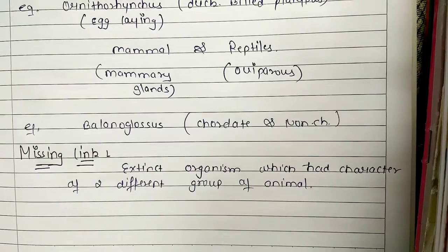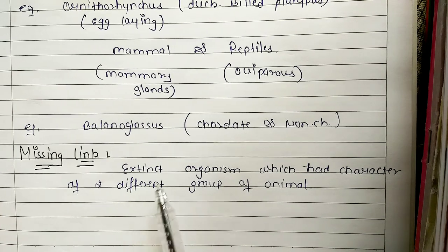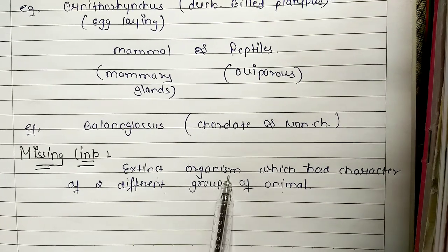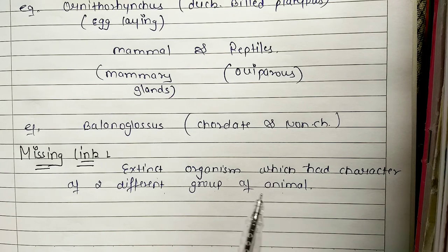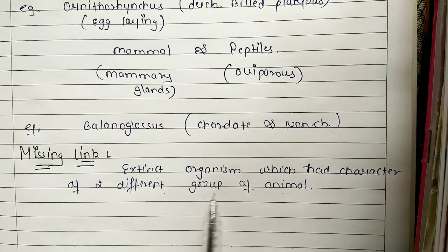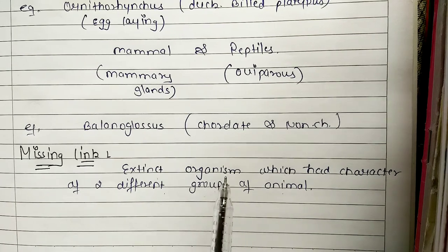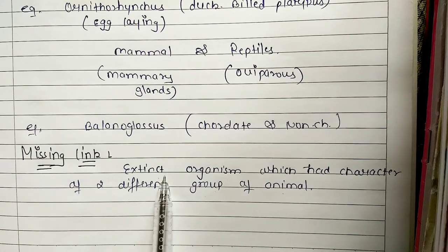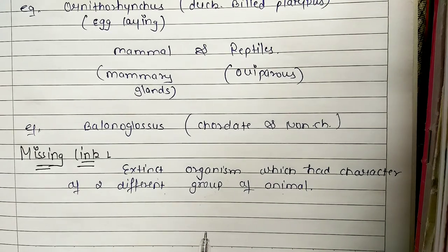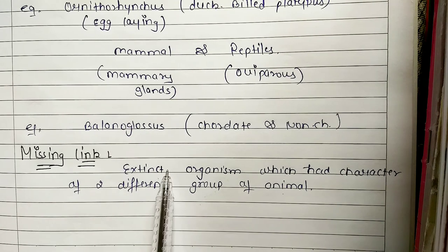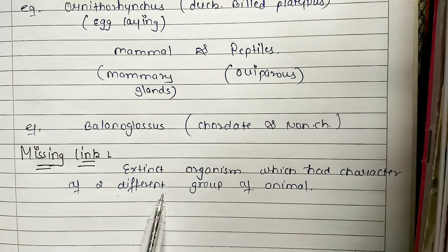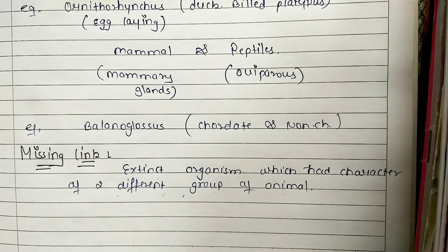Now, connecting link versus missing link. Missing link: it is an extinct organism which had characters of two different groups of animals. The difference is that a connecting link is not extinct, but a missing link is extinct. It had characters of two different groups, but now it is gone — so we have to find our missing link.